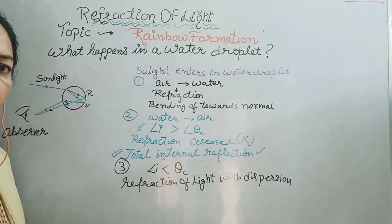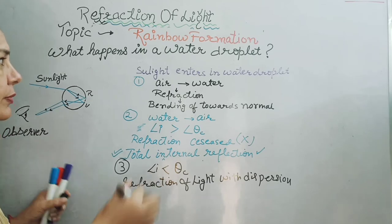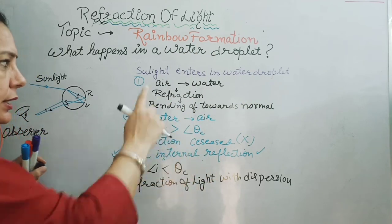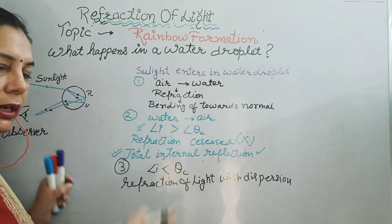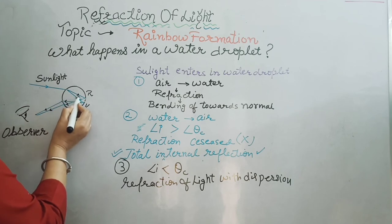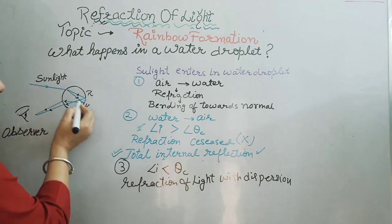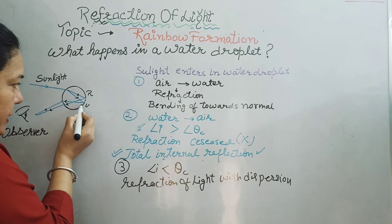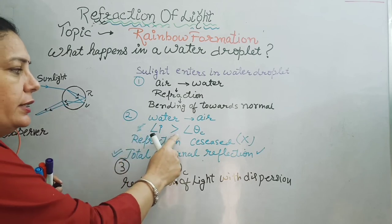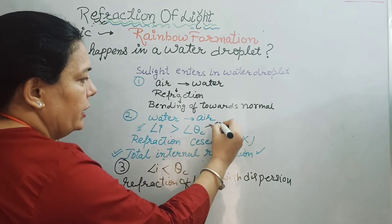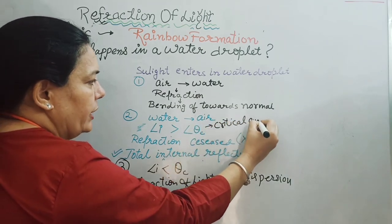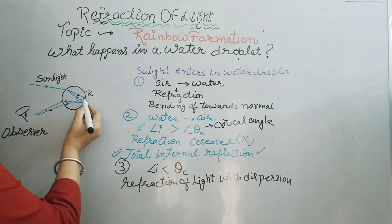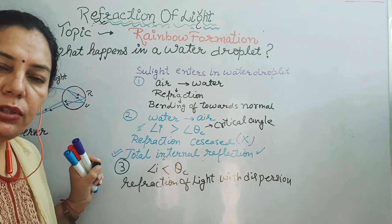This is the whole phenomenon by which we can explain how rainbow is formed. First, sunlight enters or shines on the water droplets. Then it enters from air to water medium — rare to denser — and bending of light rays occurs towards the normal, with formation of a seven-color spectrum inside the water droplet. When these seven colors reach the second interface, because the angle of incidence is greater than the critical angle, total internal reflection takes place and the seven colors do not come outside from the water droplet. They again start traveling inside the droplet and reach another surface.